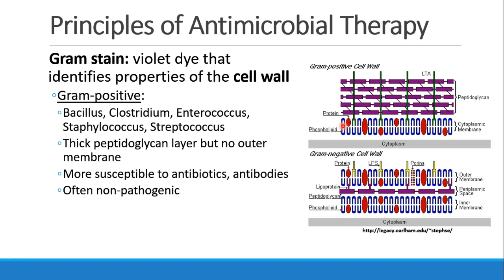A very quick review of the principles of antimicrobial therapy: it's important that you remember what a gram stain is. It's a violet dye that identifies properties of the cell wall, and there are two kinds of bacteria — gram-positive and gram-negative. Gram-positive bacteria include bacillus, clostridium, enterococcus, staphylococcus, and streptococcus. These bacteria have a thick peptidoglycan layer but they don't have an outer membrane. They tend to be more susceptible to antibiotics and antibodies, and often they're not pathogenic — they just normally live in the body.